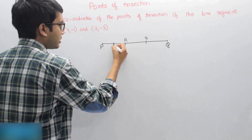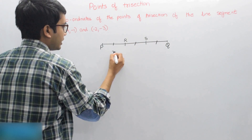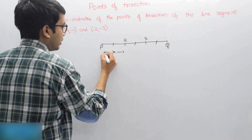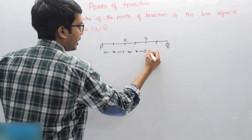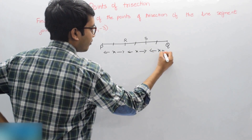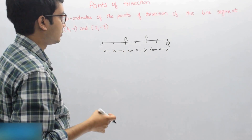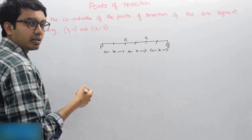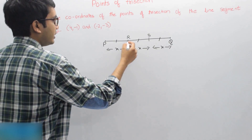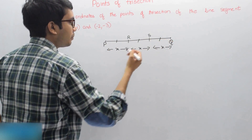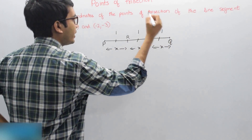That means this part is equal to this part is equal to this part. If PR is of length X, then RS will also be of length X, and SQ will also be of length X. Let us apply this concept here. But before that, one concept you should understand is that these two points divide PQ into three equal parts and in the ratio 1:1:1.